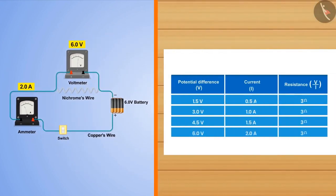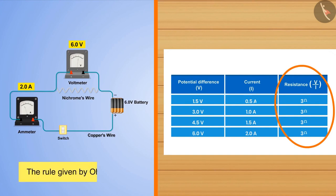If the ratio of potential difference and electric current is taken, they will always be the same. So we can say that the rule given by Ohm between the current and potential difference was correct.